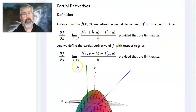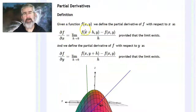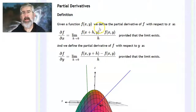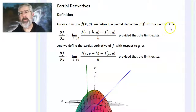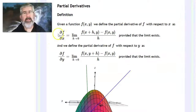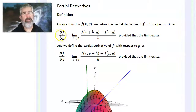Here's the definition. Given a function of two variables, we define the partial derivative of f with respect to x. The notation is: partial f, partial x — it looks like df/dx but with a scripted d.